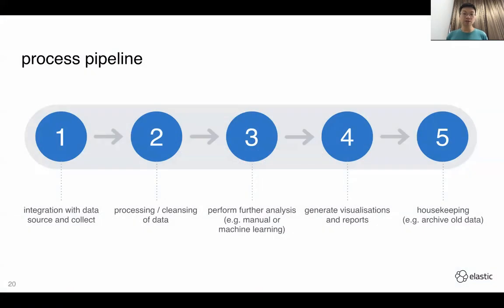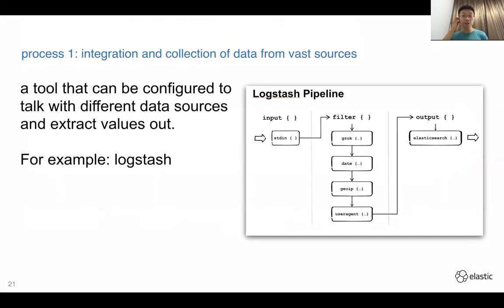Now the process pipeline — the same five steps. In Elastic Stack, for step one (collecting and integrating data), we use Logstash, which is an ETL tool. It accepts input from different sources, pumps data through a filter/transformer using Grok, regular expressions, geo-IP enrichment, and user-agent plugins, and finally outputs data to Elasticsearch or a flat file.